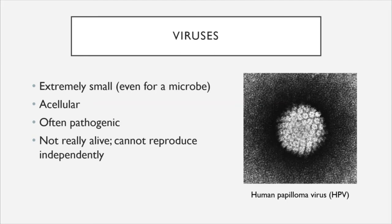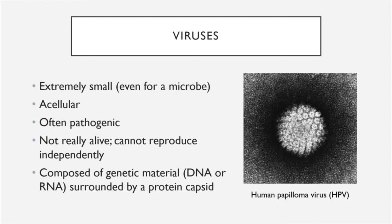The structure of a virus is very simple. Viruses are composed of genetic material — which can be either DNA or its cousin molecule RNA — surrounded by a protein capsid. On screen is an image of the human papillomavirus, or HPV, showing the protein capsid, with genetic material internal to it. This image was taken using an electron microscope, which is far more precise than the microscopes we use in this class. The microscopes we use are not powerful enough to visualize viruses.